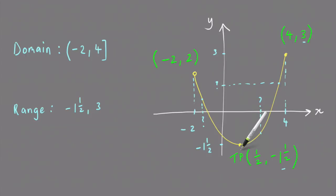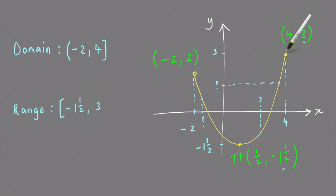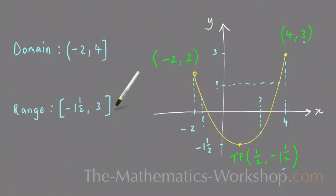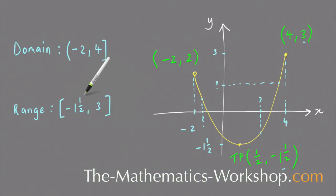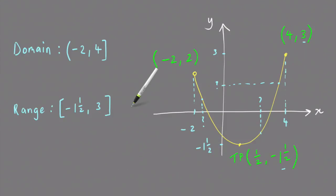Because minus one and a half is included, you have a square bracket here. And this value up here when y equals 3 has a colored circle, so that means it is included as well. So the range is the set of y values from minus one and a half to three inclusive. And that's how you find the domain and range of a parabola.